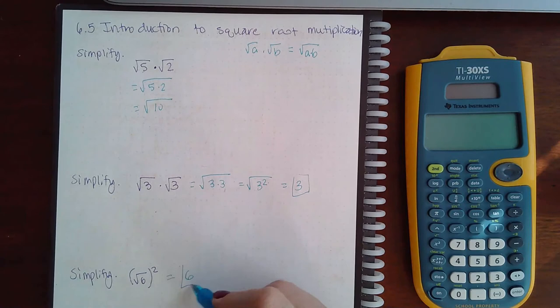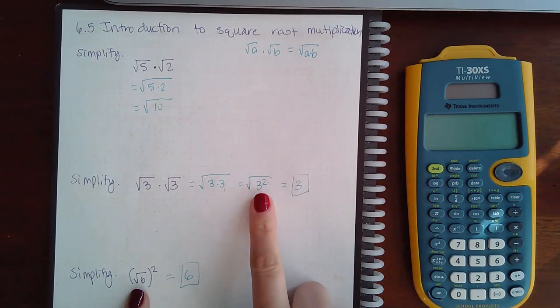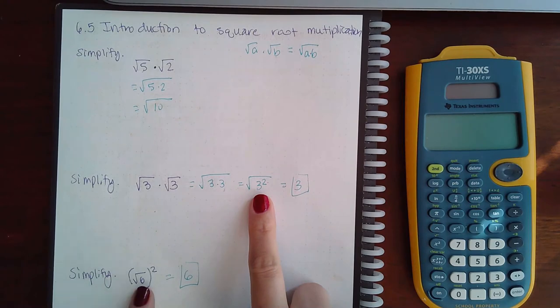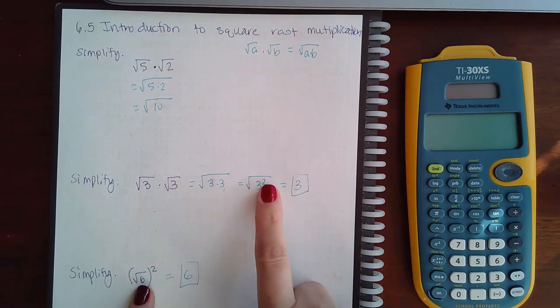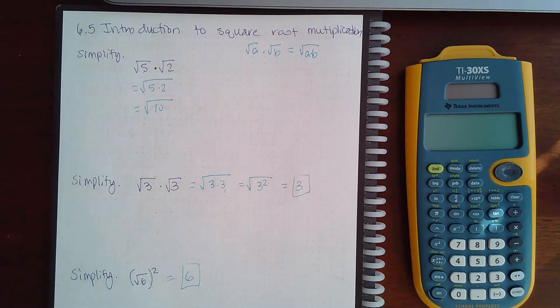It doesn't matter if it looks like this or if it looks like this bottom one. If you have a square root and a square, they will cancel each other out.